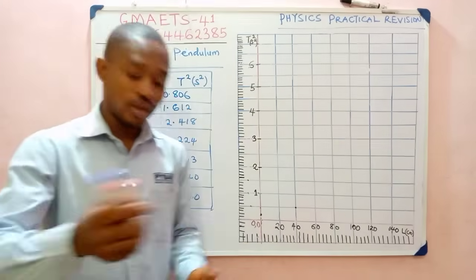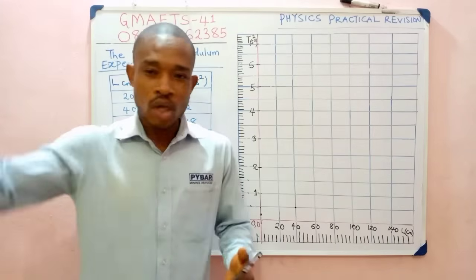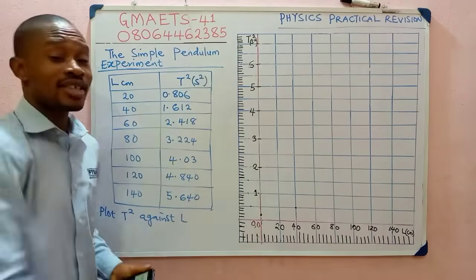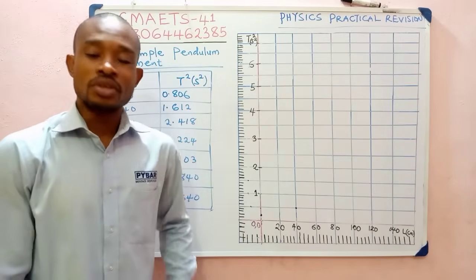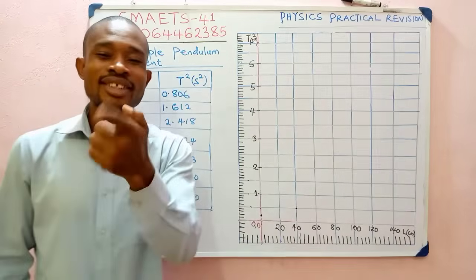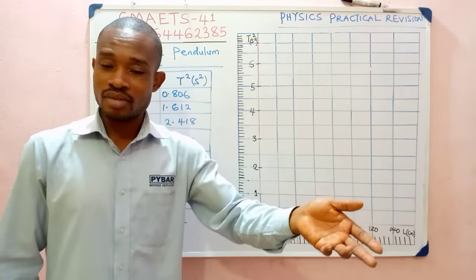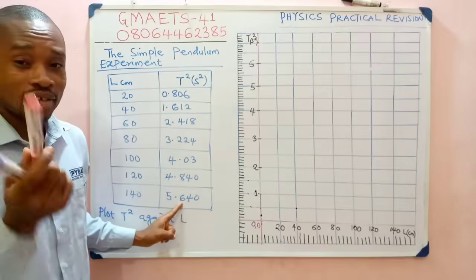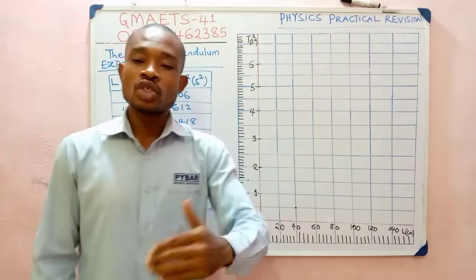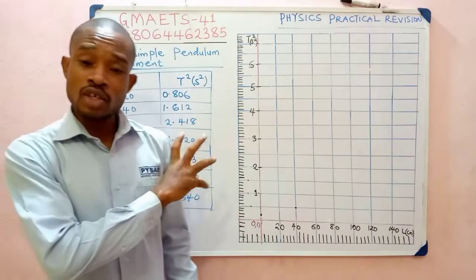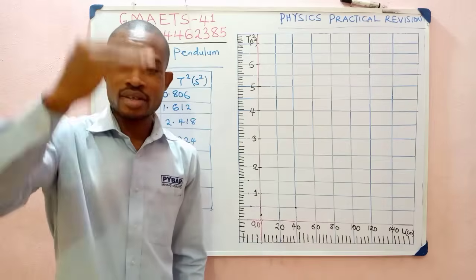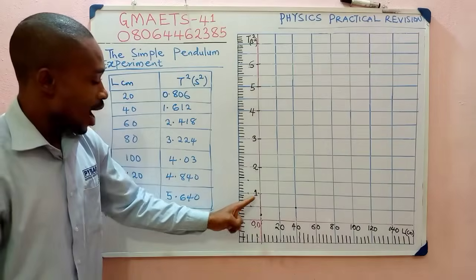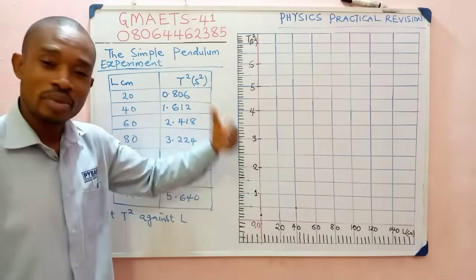I located the highest value on the t² axis, which is 5.64, then divided by seven lines, giving 0.8057. Since 0.8057 is more than 0.8, using 0.8 might mean the highest value doesn't fit on the graph. When approximating for your scale, it's best to increase the value — so I approximated 0.8 up to 1. That's why I chose every two centimeters equals one unit.